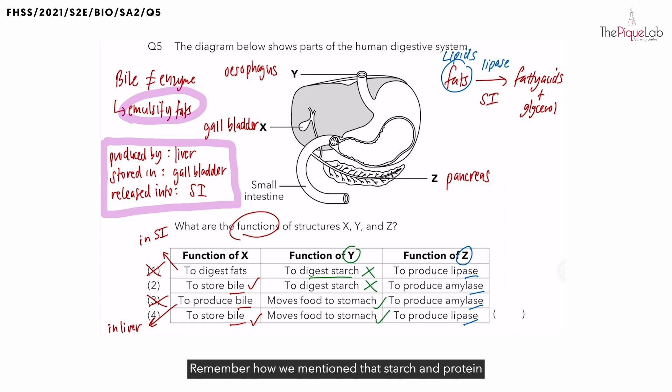Remember how we mentioned that starch and protein gets a head start in digestion? That means it starts earlier in the mouth and stomach respectively. If that does not happen, for instance, your mouth and stomach is removed,